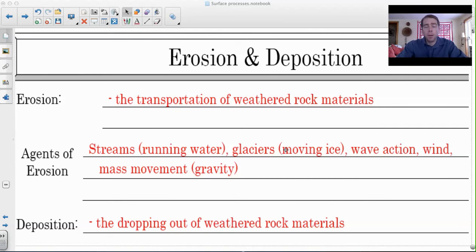Mass movement or gravity is one of the things we're going to talk about today. Deposition is just the dropping of that material. So weathering breaks it apart, erosion picks it up and carries it, and deposition is when it gets dropped. You need to know the distinction between those three words.